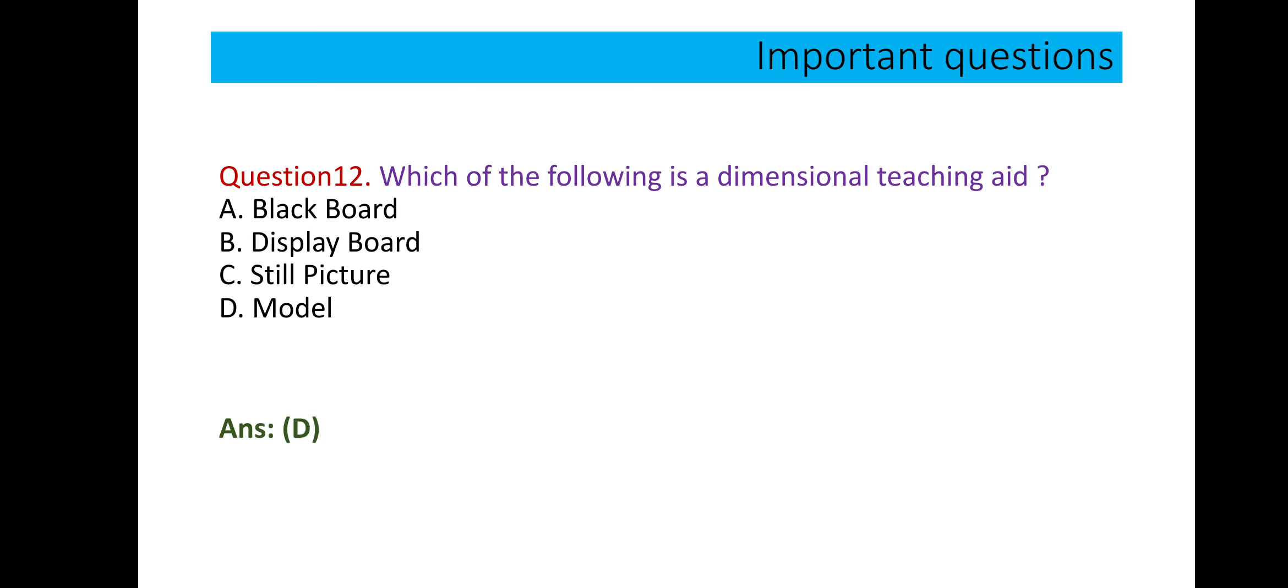Question number 12: which of the following is a dimensional teaching aid? Read the question carefully - which of the following is a dimensional teaching aid? So blackboard, this is totally wrong because in blackboard we have only two dimensions, right? We cannot see all the dimensions. Display board is also wrong. Still picture, no. Model is correct because in a model we can see all the views from every angle. We can see the things in the model, so if you are talking about dimensional teaching aid, option D is correct, that is model.